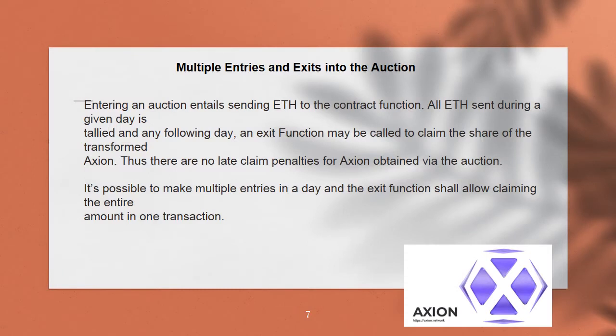Multiple entries and exits into the auction. Entering an auction entails sending ETH to the contract function. All ETH sent during a given day is tallied, and any following day an exit function may be called to claim the share of the transformed Axion. There are no late claim penalties for Axion obtained via the auction. It's possible to make multiple entries in a day, and the exit function shall allow claiming the entire amount in one transaction.